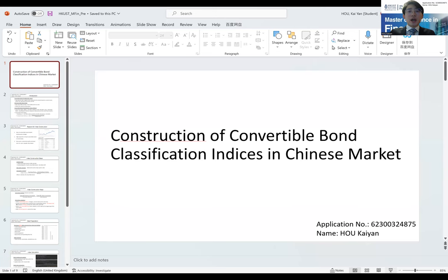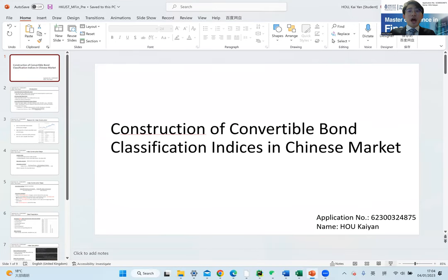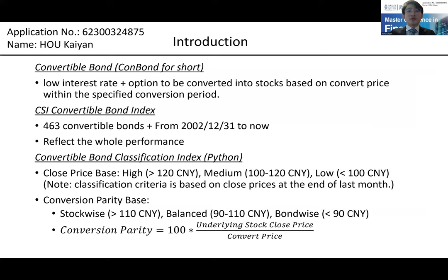First part is introduction. Convertible bonds, Kanban for short, have both low interest rate and option for stock conversion. Right now, the only existing index for the Chinese Kanban market is the CSI Kanban index to reflect the market performance. What I want to construct here by Python are Kanban classification indexes. There are two bases for the classification. First is Kanban close price — according to different prices, I classify the bonds into high, medium, and low. Second is Kanban conversion parity, with the relevant formula. According to different parities, I classify the bonds into balanced, stock-wise, and bond-wise.